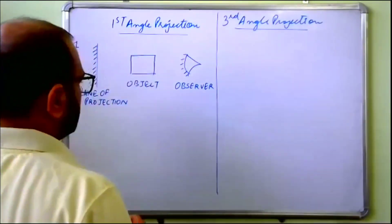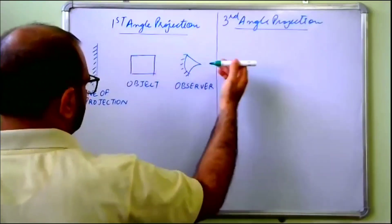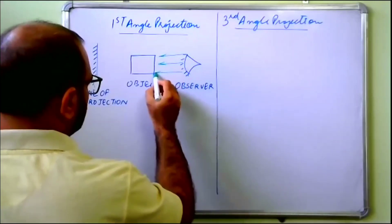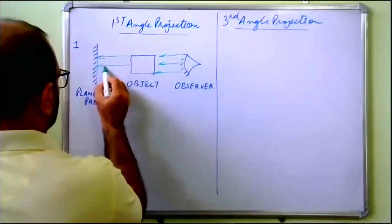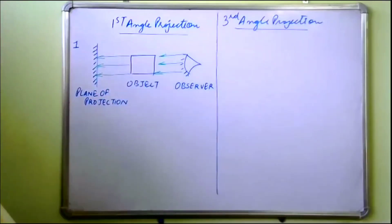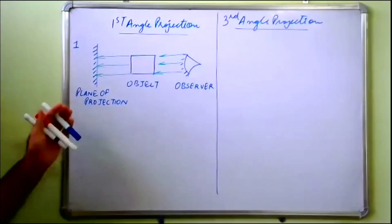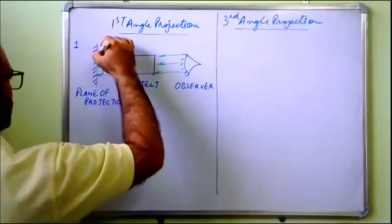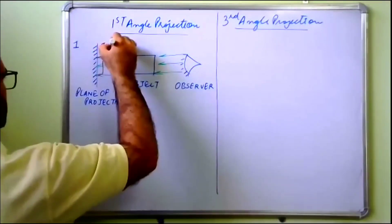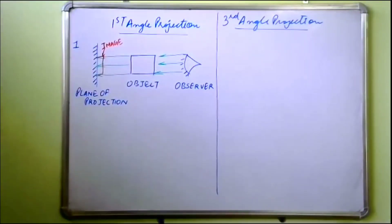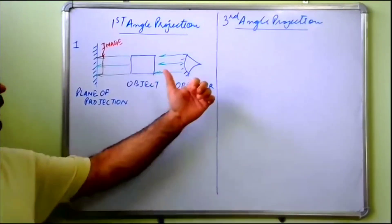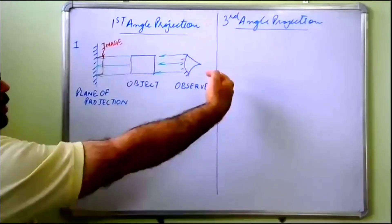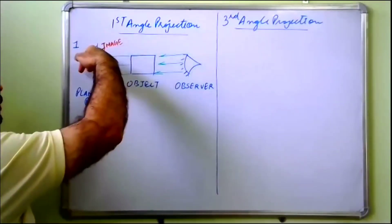In first angle projection, if you are viewing the object from the right-hand side, the projection will be drawn at the left — on the opposite direction. So you view it from the right, and this view will be drawn at the left.